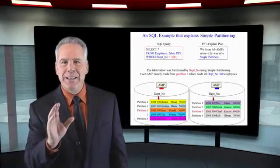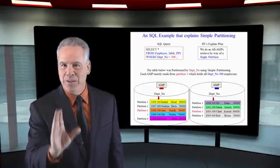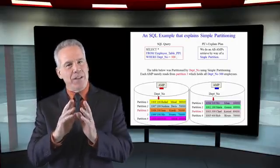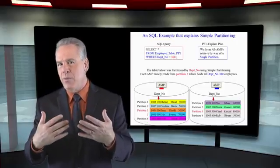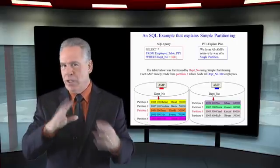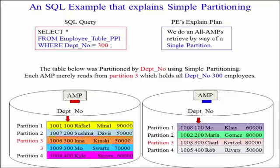Partitioning is designed to eliminate full table scans. Now let's think about this. If we query this table where the employee number is equal to something, it's a single AMP retrieve because that's the primary index. But we partitioned this table by department number Dept_No column. So if we were to say SELECT everything from the table WHERE department number equals 300...